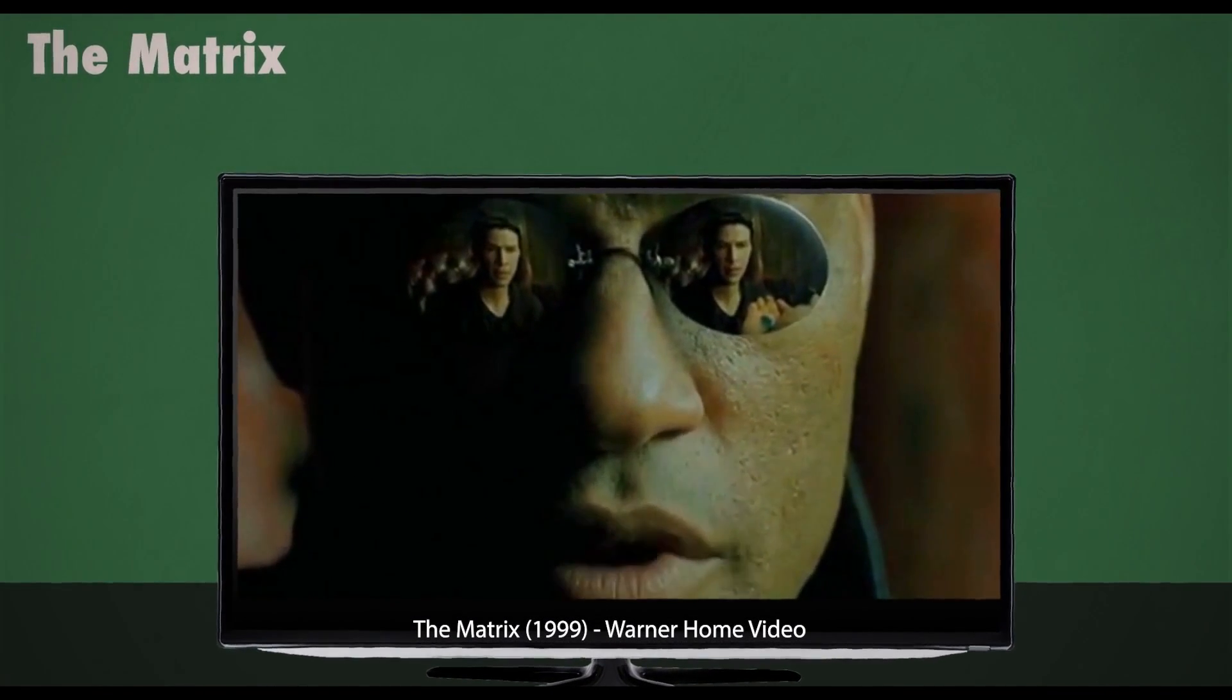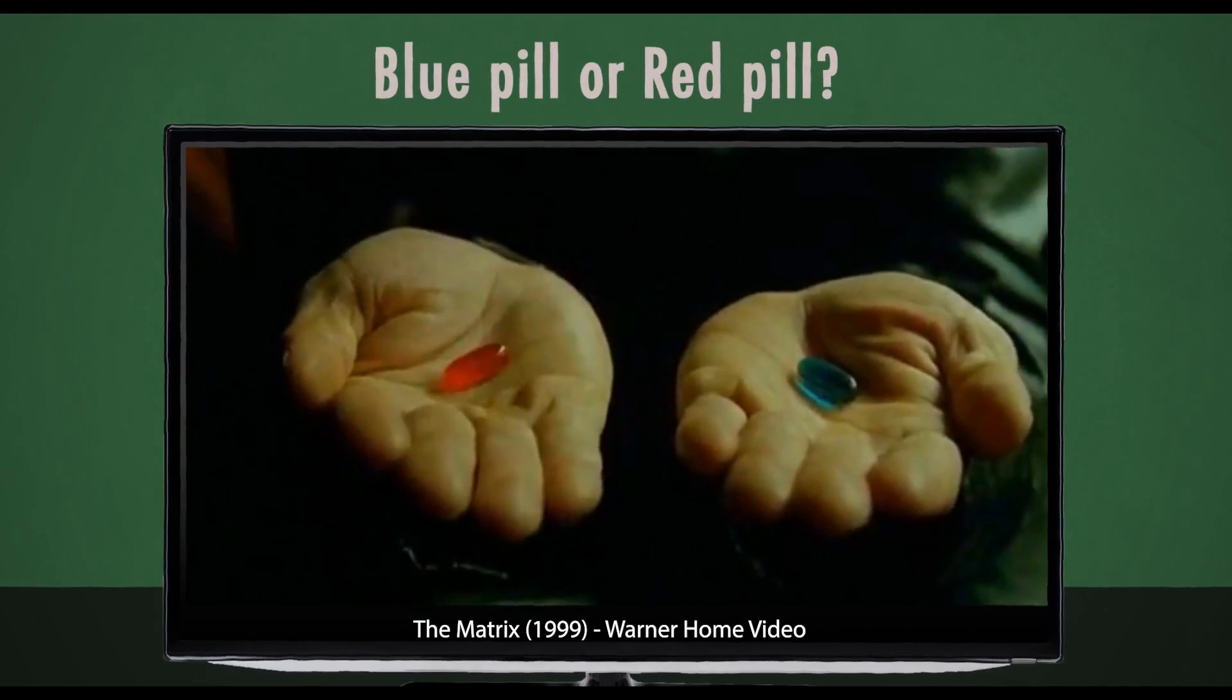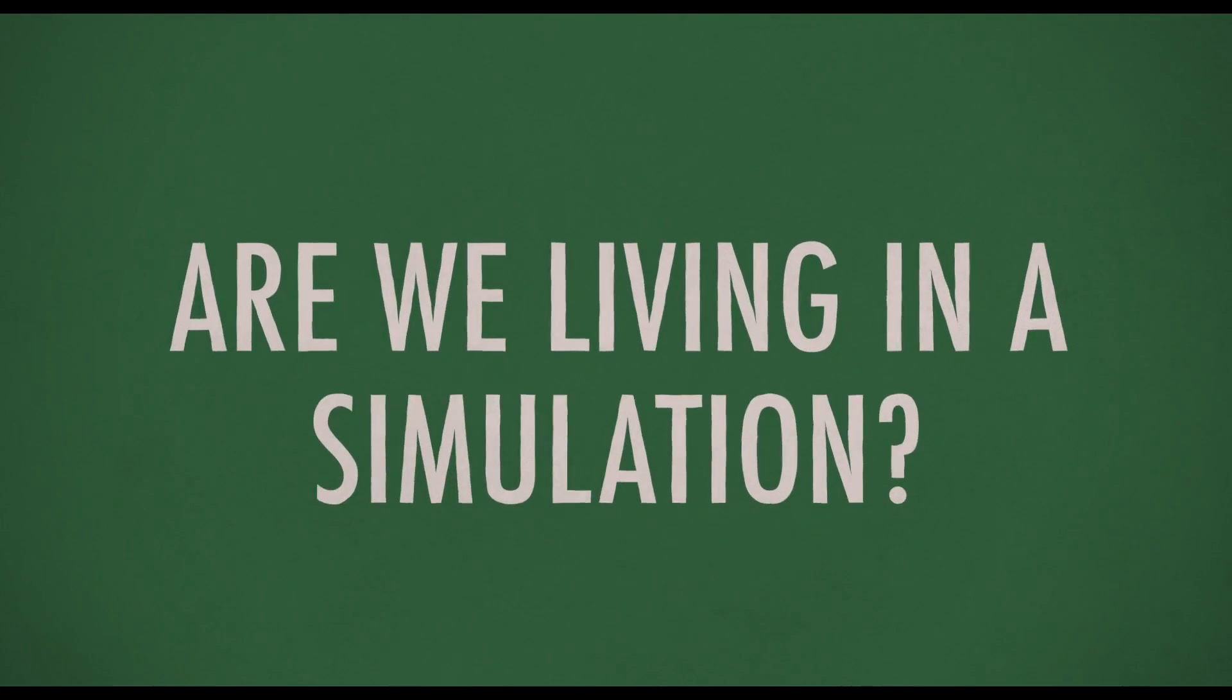If you found out that you were in the matrix and was given a choice like Neo, would you have picked the blue pill or the red pill? At some point, we've all considered the question: is this world real or are we living in a simulation?